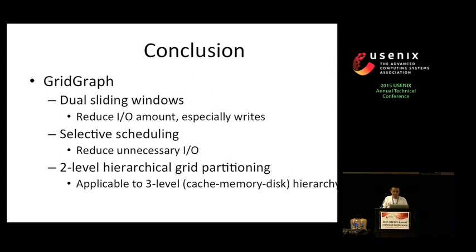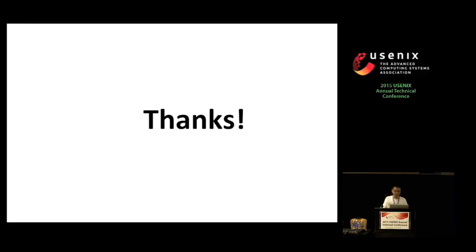In conclusion, the reduction of IO amount is the key to the performance gain in GridGraph, and by using the grid representation and the dual sliding windows method, we can reduce IO amount, especially the writes, which is a very useful feature. Selective scheduling also helps a lot in reducing the unnecessary IO operations, and can be used for many traversal-based applications. And finally, the two-level hierarchical partitioning solves the dilemma of the granularity of partitioning and is a natural solution to the three-level memory hierarchy. And that's it. Thanks for your listening, and I'm glad to take your questions.